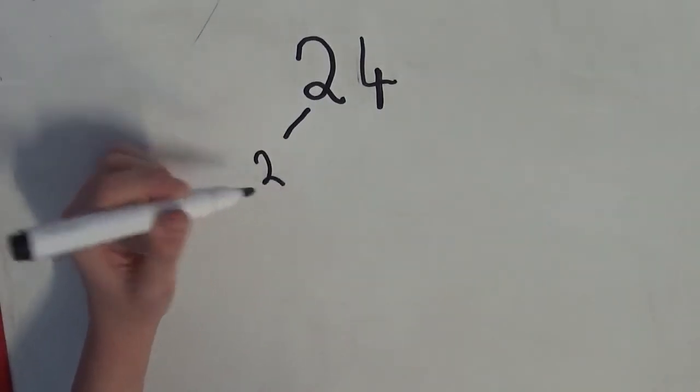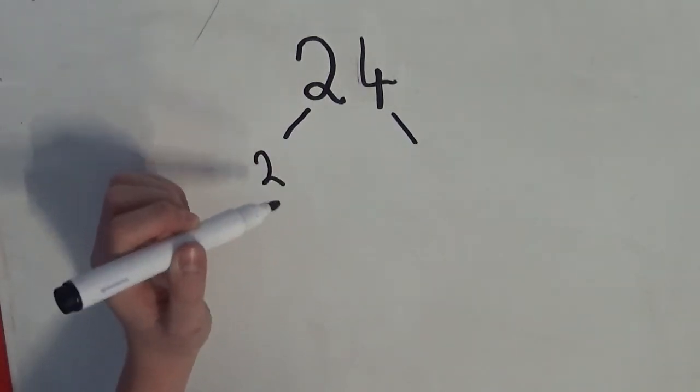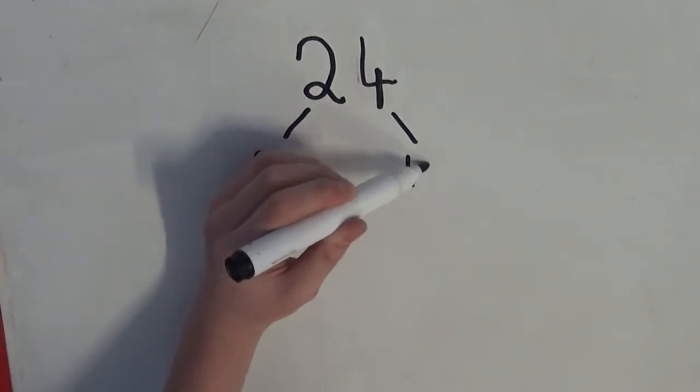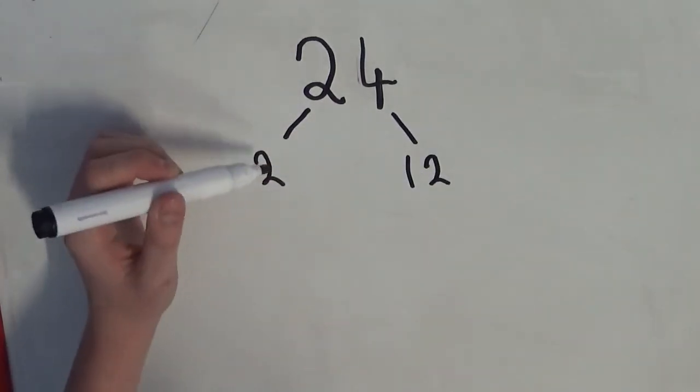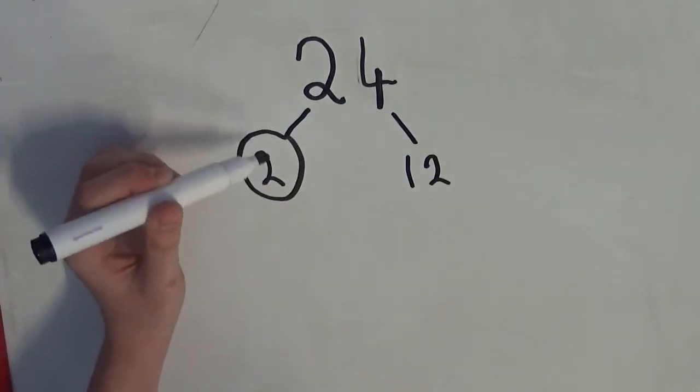Now, 2 goes into 24 and the factor pair with 2 is 12. 2 is divisible by one and itself, so it's prime.